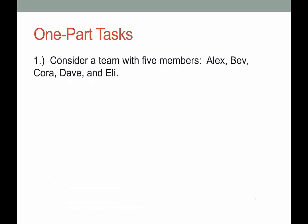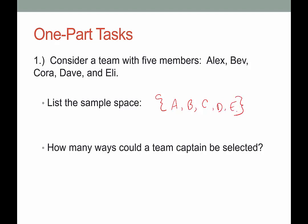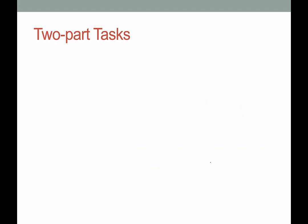For one-part tasks, let's consider a team that has five members: Alex, Bev, Cora, Dave, and Eli. If we're going to list the sample space — which we put in braces — we can abbreviate here because all of the people conveniently have different first letters to their names: A, B, C, D, and E. If we wanted to choose a team captain by putting all the names in a hat, how many different ways could a team captain be selected? Don't overthink this — it's just one team captain and there are five to choose from, so there are five ways a team captain could be selected. Those five ways are the sample space: it could be Alex, Bev, Cora, Dave, or Eli.